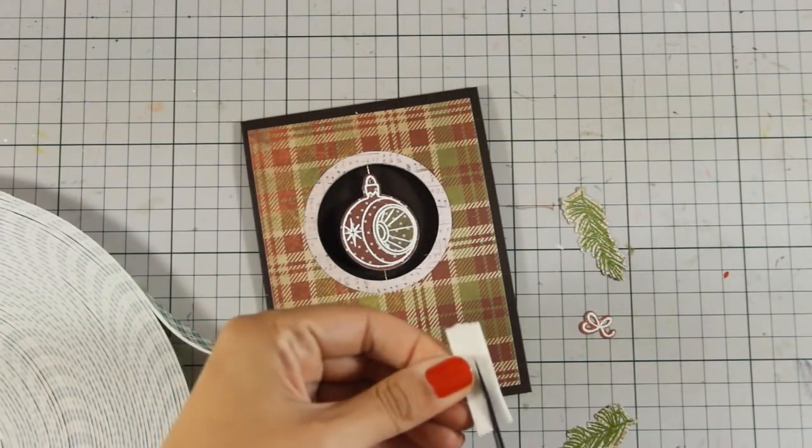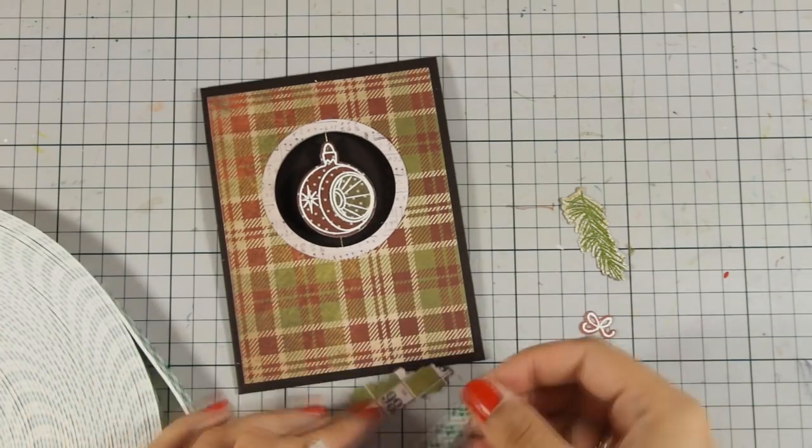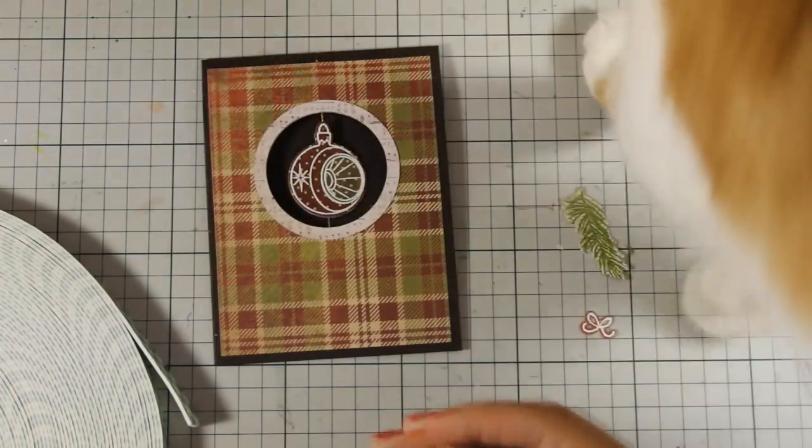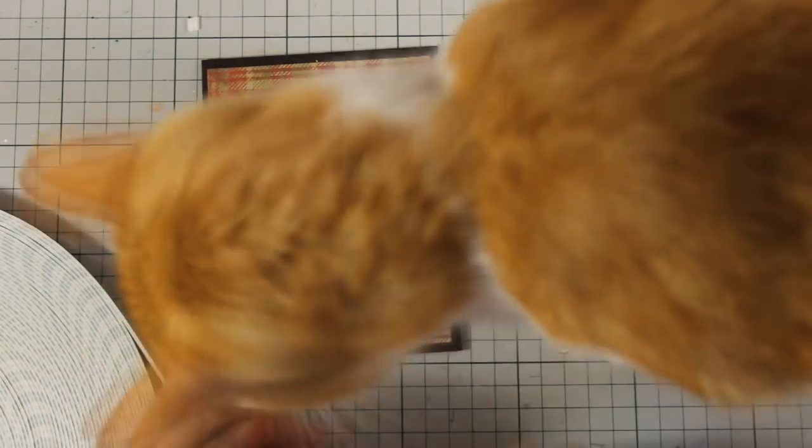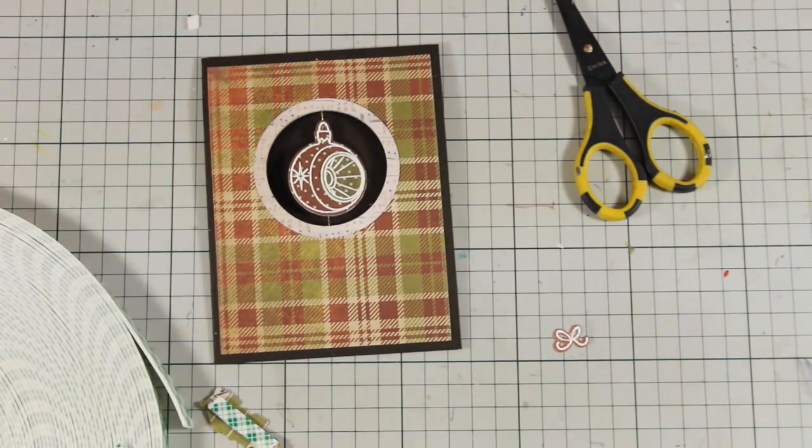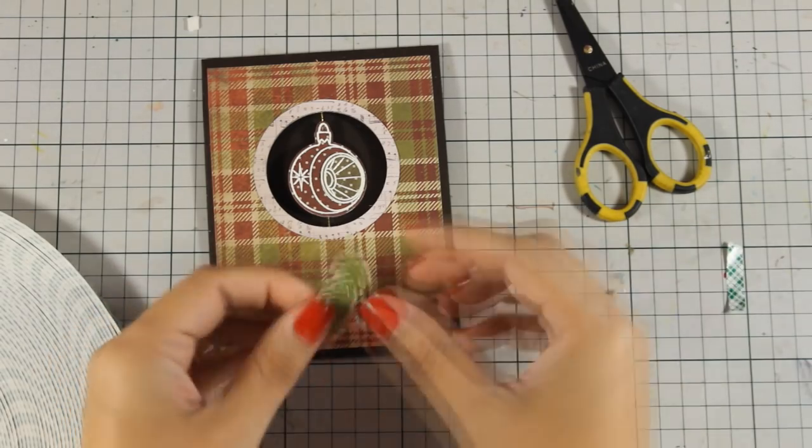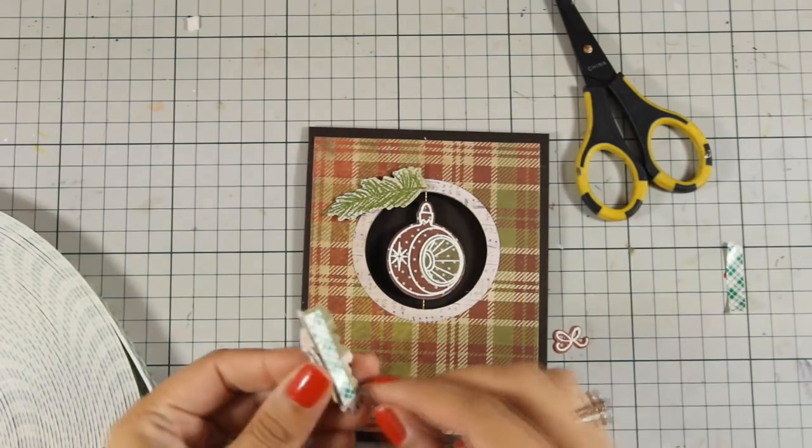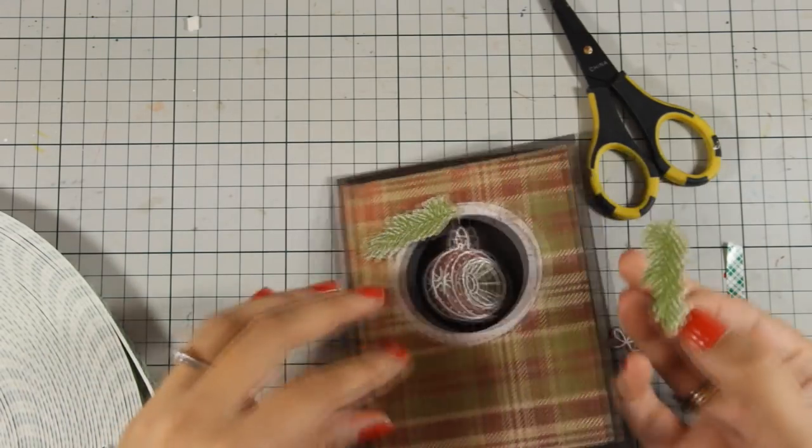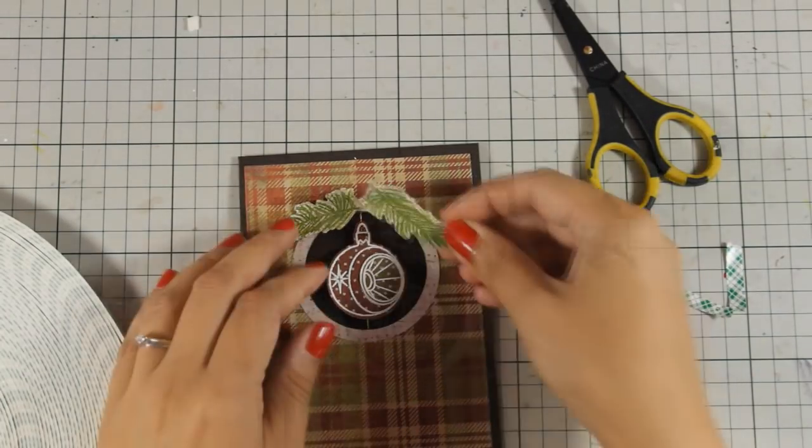So I have all my die cuts ready to go now. I am going to use some foam tape at the back of the branches to help them pop a little bit more and that's Ginger who decided that those branches were really interesting. So anyway I am going to add those foam tapes at the back and I am going to stick them on top of my ornament and this way I am going to create a nice little cluster at the top with the two branches and the bow. Just make sure that as you stick those down you don't block the spinning of the ornament.